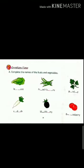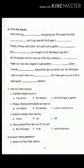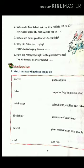Now question time. Here you have to complete the names of fruits and vegetables that were in Mr. McGregor's garden. Next, the summary of this story is given but some words are missing — you have to complete this story by filling in the missing words. Now tick the right answer and answer the questions that are related to the story.